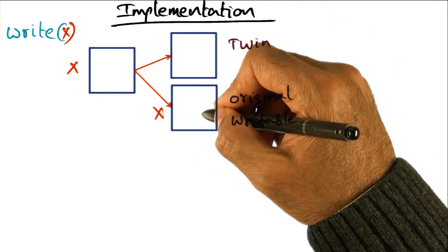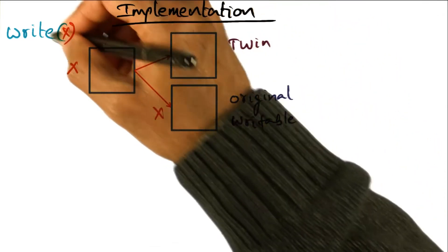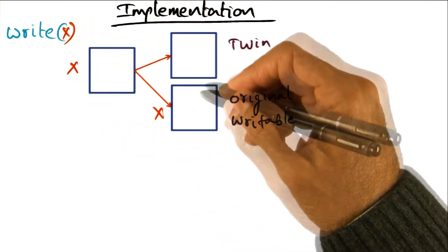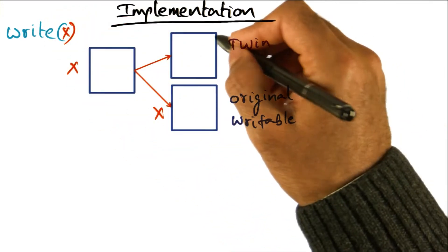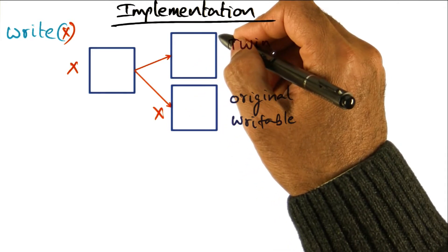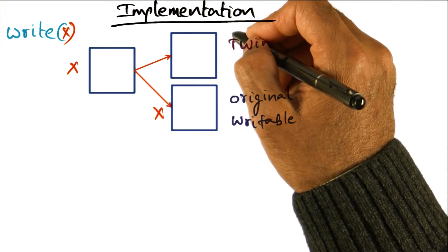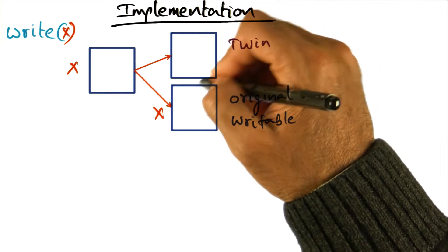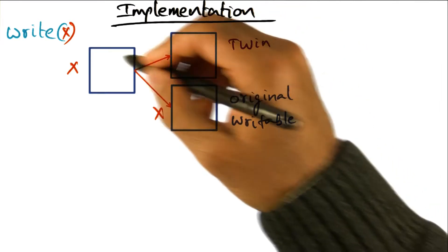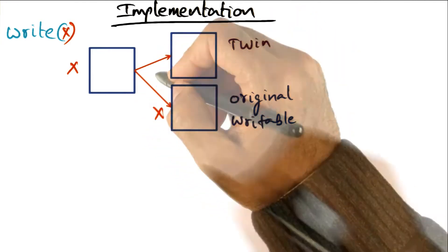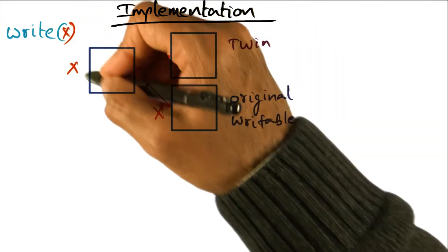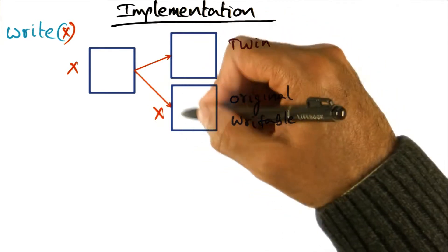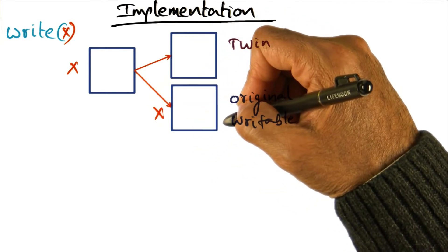And the original page is writable by this process. That mapping is there in the page table. This new copy, a twin, has been created in physical memory. It's not mapped into the page table of any process. It is just an additional copy of the same page created by the operating system as a twin. So this page has been made writable and therefore the thread can make changes to this x, which is the original copy of the page.